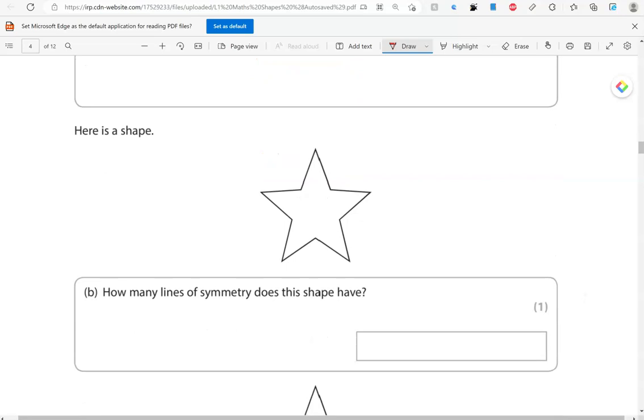Here is a shape. How many lines of symmetry does this shape have? So, this is a star. We have a line of symmetry here. So, that's 1, 2, 3, 4, 5 lines of symmetry all together.